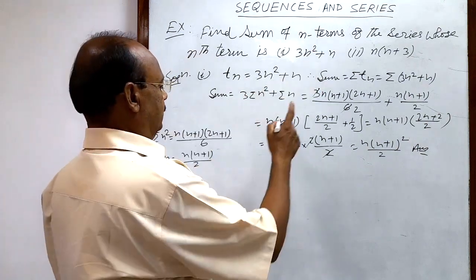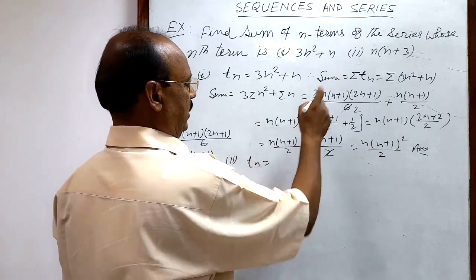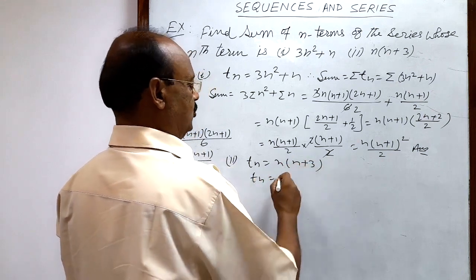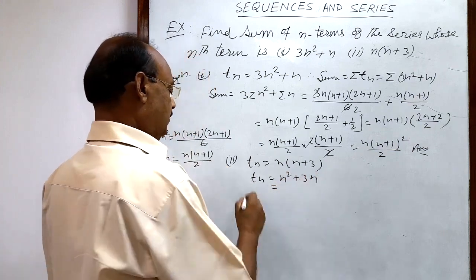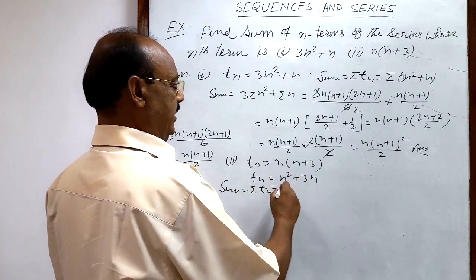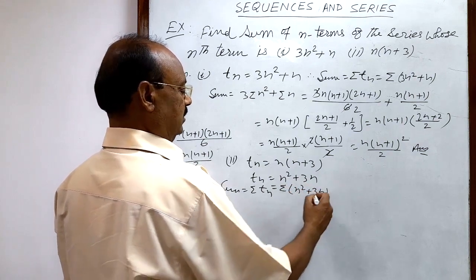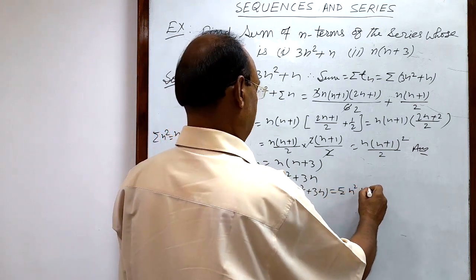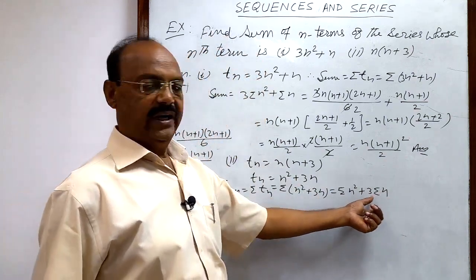Now let us see the second part. Here the nth term is n(n+3). Multiplying these two factors: t_n = n² + 3n. Therefore, the sum = sigma(t_n) = sigma(n² + 3n). Sigma is distributed over both terms, giving sigma(n²) + 3·sigma(n), with the coefficient 3 taken outside.